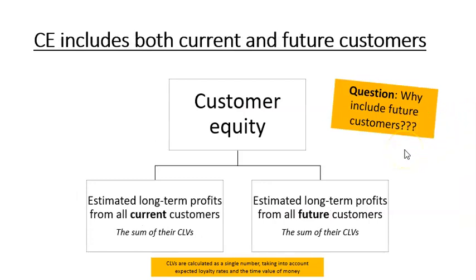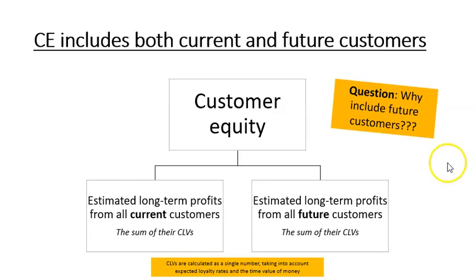Customer equity is basically a calculation that adds up the sum of lifetime values of all current customers and also all future customers. That might seem bizarre — why include future customers? The reason is that part of marketing is brand building, building retailer connections, and building well-regarded products, which ensures we will get future customers. A lot of brand-building marketing is really not about today's customers but about customers who will come in next week, or in six months, or three years' time, because they've been attracted to the brand.